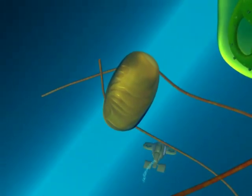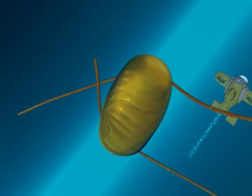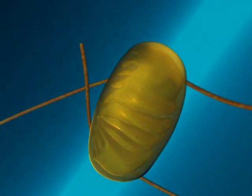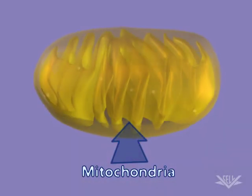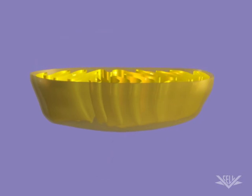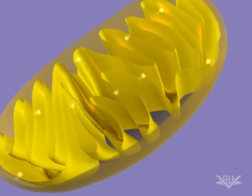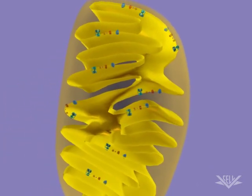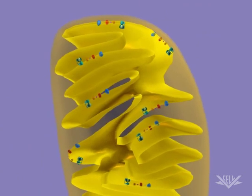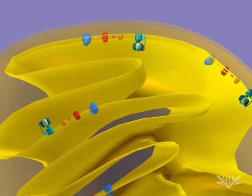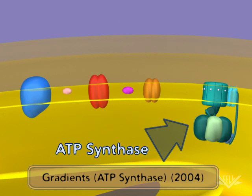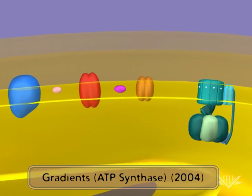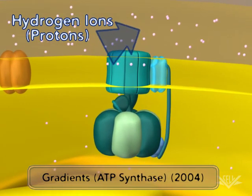Mitochondria and chloroplasts are the sites for unique cellular processes. We'll first look at the mitochondria. This organelle produces ATP, an energy molecule that is used by many other cellular processes. ATP is produced by a complex in the mitochondrial membrane called ATP synthase.